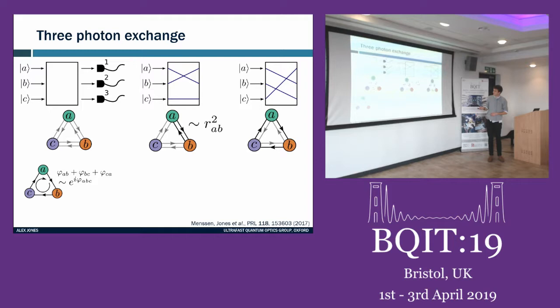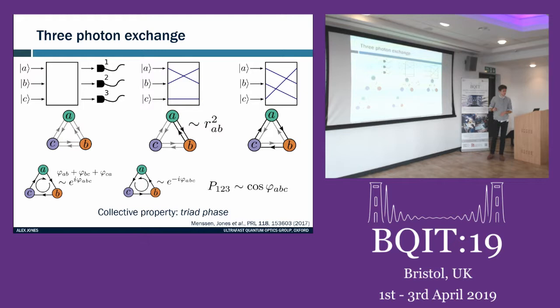We now have a dependence on the argument of the first edge plus the second plus the third — their sum is an overall phase we call phi_abc, the triad phase. The interferometer also supports the exchange going the other way, traversing the loop in the opposite direction. When we count coincidences, we get contributions from two-photon interference plus a cosine dependence on this triad phase. We did experiments looking at how to isolate this property from two-photon interference.